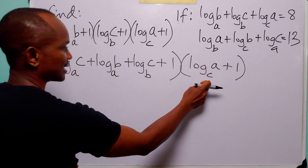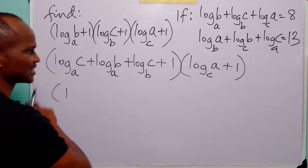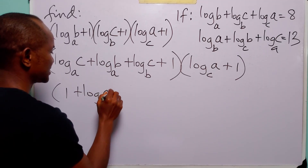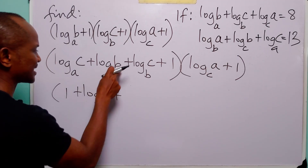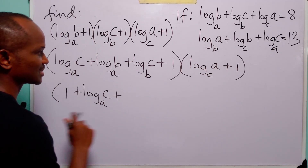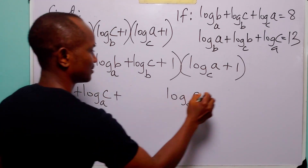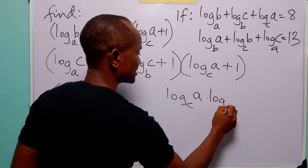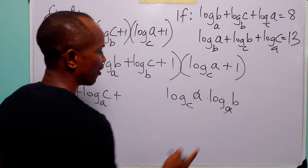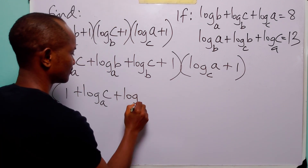So that product gives us 1. Log to base a of c gives us log to base a of c. Log to base a of b multiplied by log to base c of a gives log to base c of a times log to base a of c, and then log to base c of b.